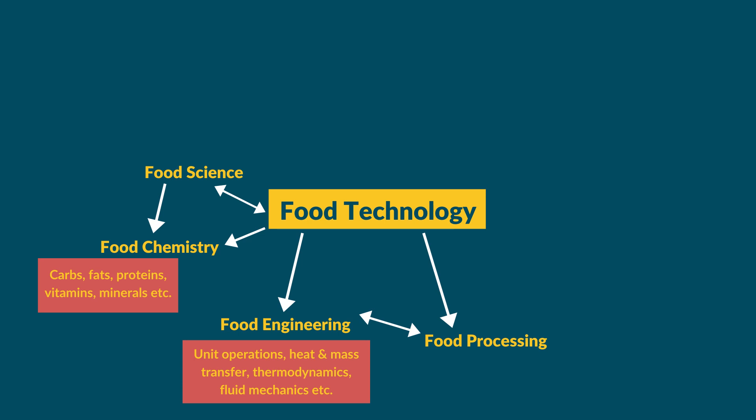How is food processing interconnected with food engineering? As already mentioned, food engineering involves the study of equipment, machines, and instruments used in the processing of a food product. That is how food processing and food engineering are interconnected.